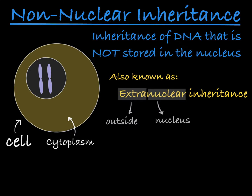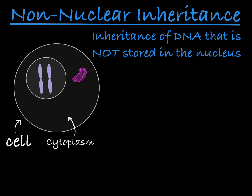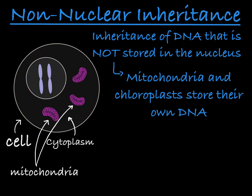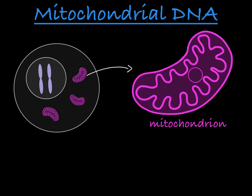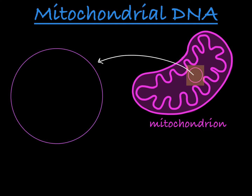You may also hear it referred to as cytoplasmic inheritance. This hinges on the fact that some organelles, like mitochondria and chloroplasts, carry their own units of DNA. For example, mitochondria have their own set of genes carried within each mitochondrion. DNA in the mitochondria is called mtDNA, and it takes the shape of a circular plasmid containing 37 genes.